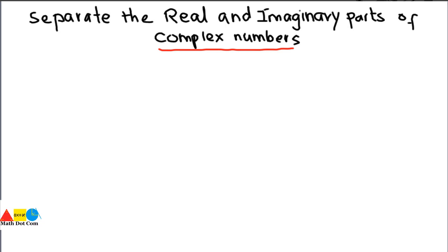Today we are going to find the ways by which you can separate the real and imaginary parts of complex numbers — whether the complex numbers are adding, subtracting, dividing, or multiplying with each other — and how to express them in the form A plus B iota.